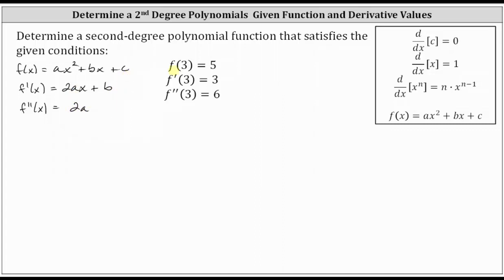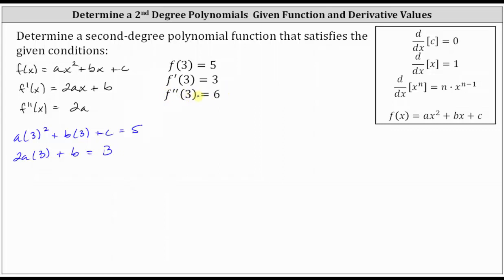Since f of three equals five, substituting three for x gives us a times the square of three, plus b times three, plus c must equal five. Since f prime of three equals three, substituting three for x in two ax plus b gives us two a times three plus b equals three. And since f double prime of three equals six, two a must equal six.